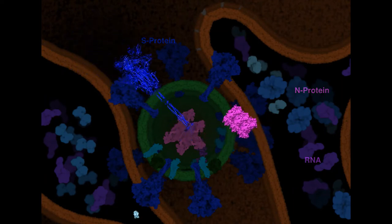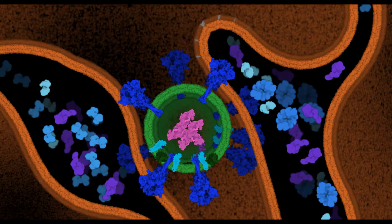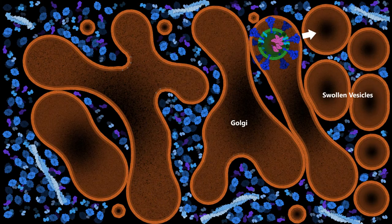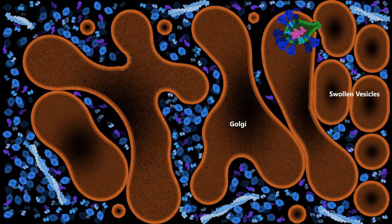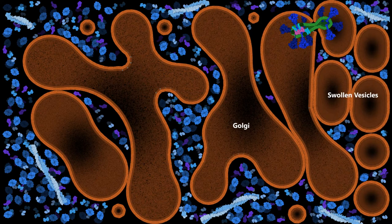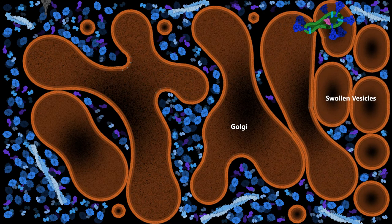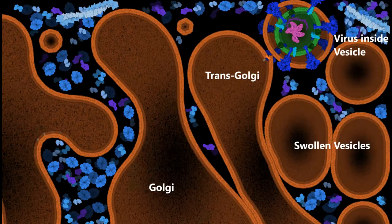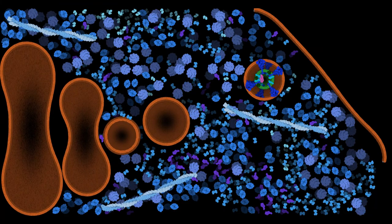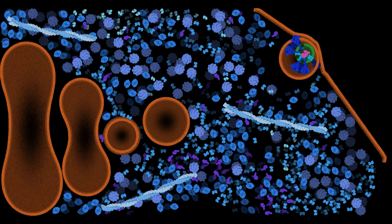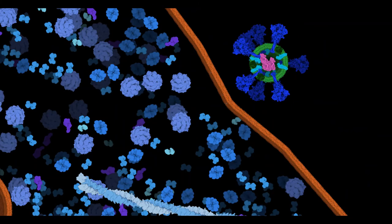On the outside of the virion, the S and N proteins form an assembly-competent complex, which will provide a site of budding out of the Golgi. As the virion travels through the Golgi, the trans region of the Golgi swells and produces smooth vesicles. Lastly, the virus sorts into the smooth vesicle and heads for the plasma membrane. The vesicle exits the cell via membrane fusion.